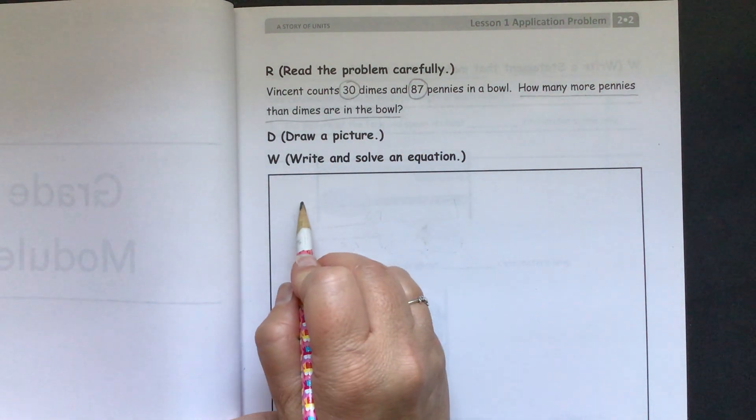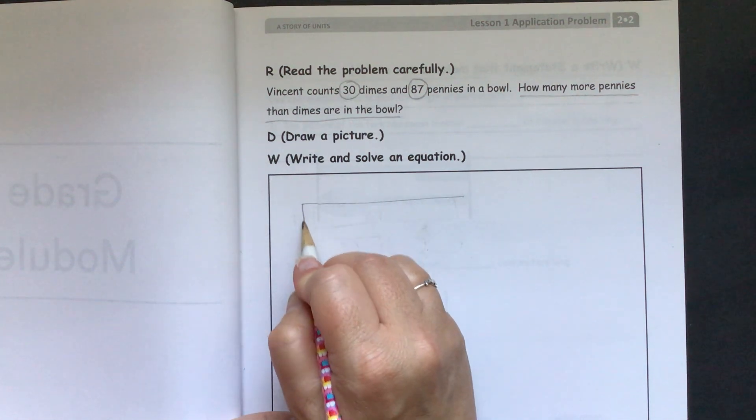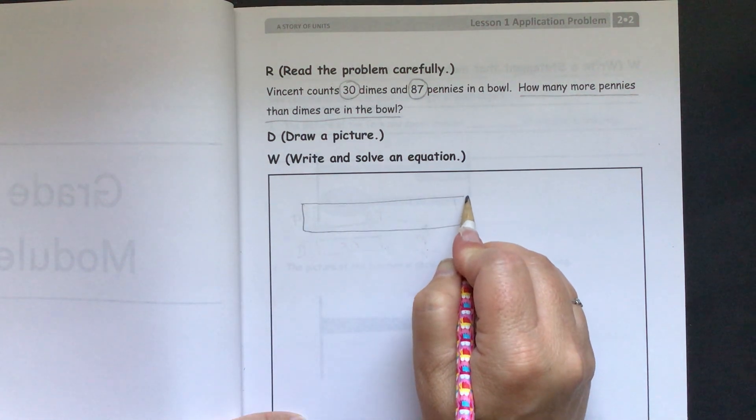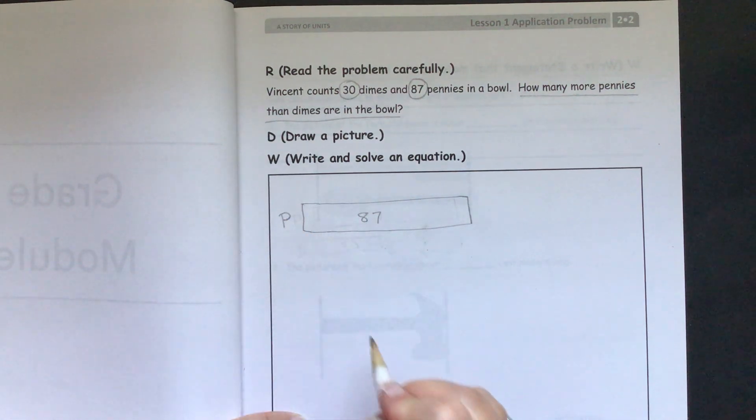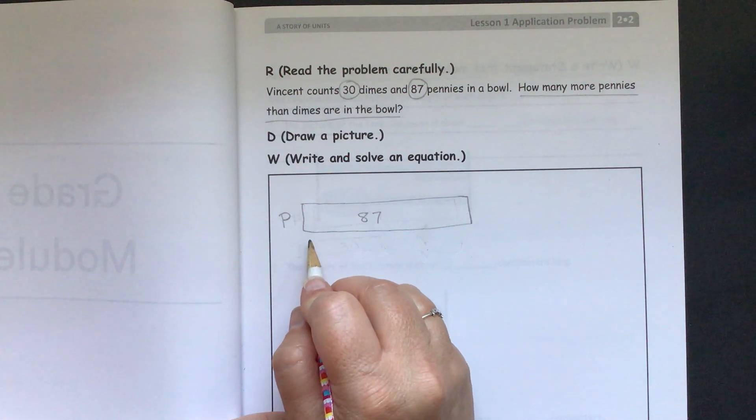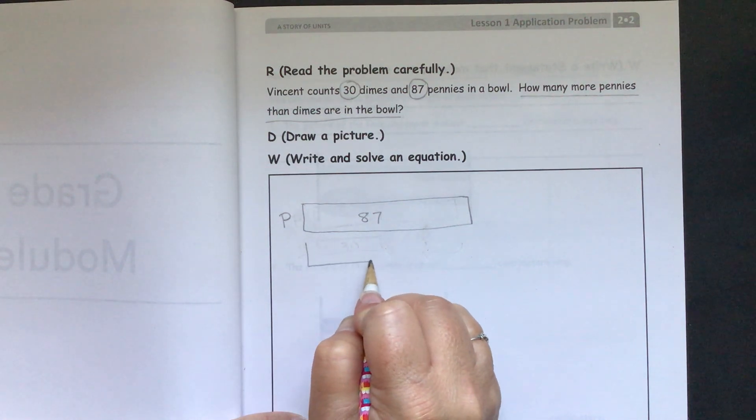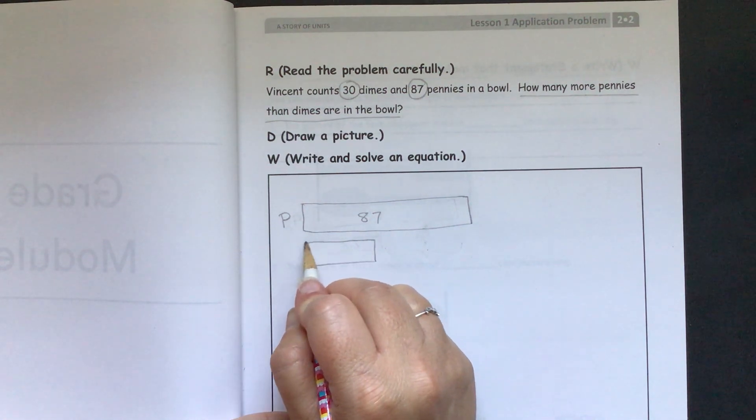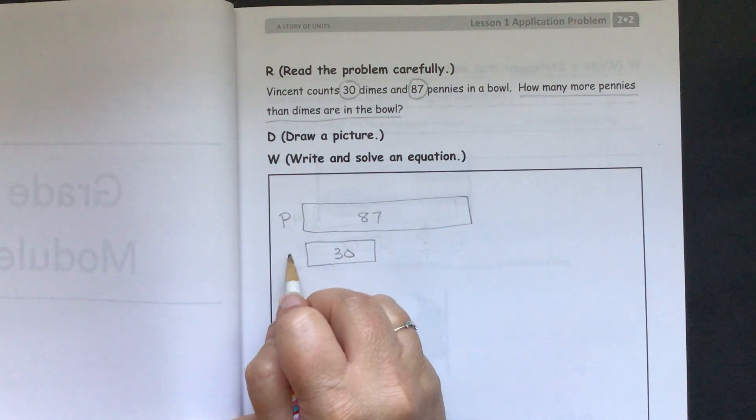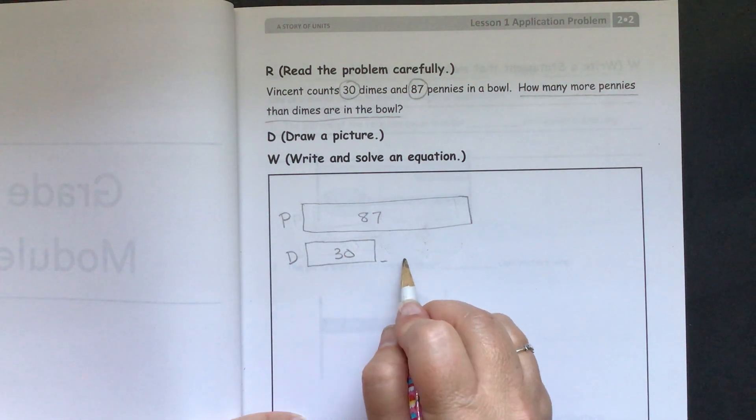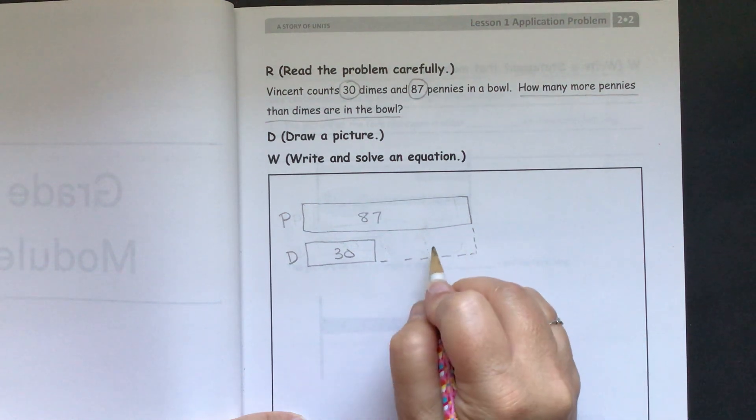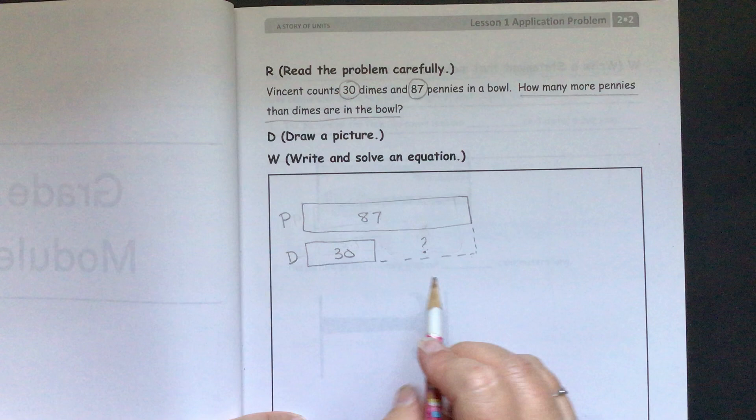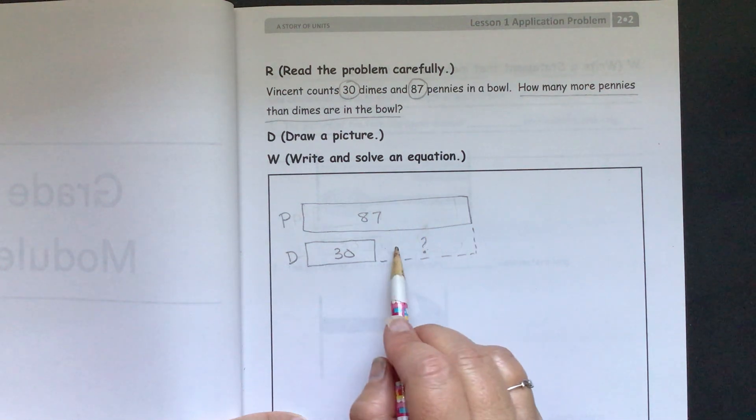So we can start with our tape diagram. We'll draw 87 and I'll put a P for pennies. And then we have 30 dimes, so we need to make it smaller. There's 30 and D for dimes. And then we need to figure out this area. We need to find out what the difference is here, from here to here. What's the difference between 87 and 30?